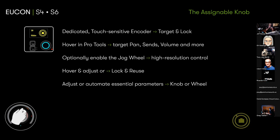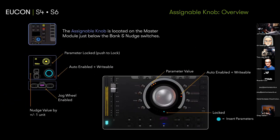You can target pans, sends, and volume. Pro Tools will tell you 'hey, you're targeting me' — you'll see feedback there. We'll look at the jog wheel because it's a really cool interface — it feels great and is easy for smooth moves whether in real time or half-speed automation playback. You also have all the information about values, parameters, and automation state on both the knob and the jog wheel.